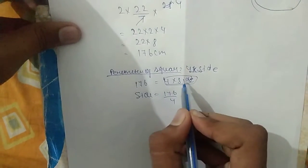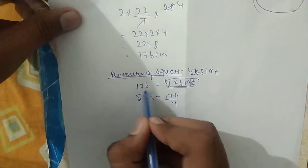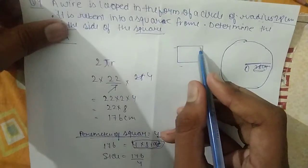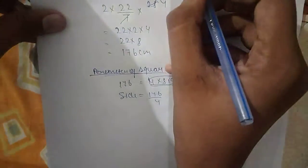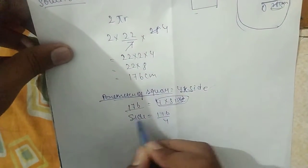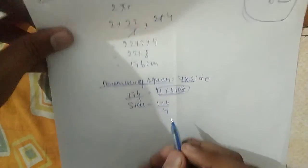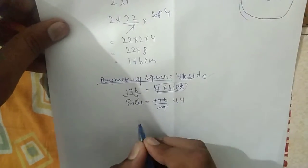Here we can write the perimeter: 176. We can solve for the side. The perimeter equals 4 times the side, and 4 will divide into 176, so we can write side equals 176 divided by 4.